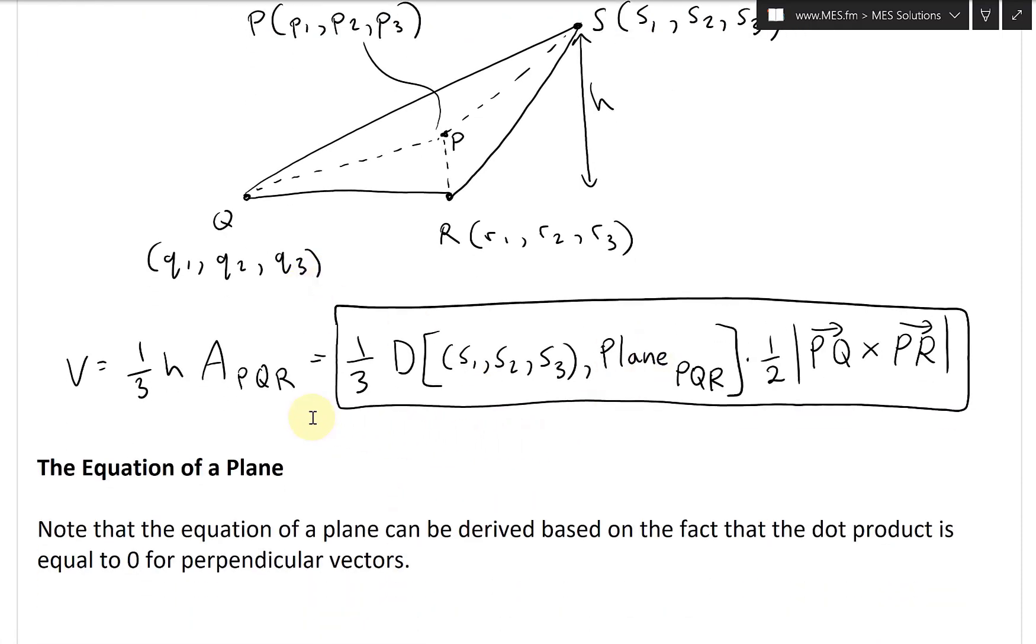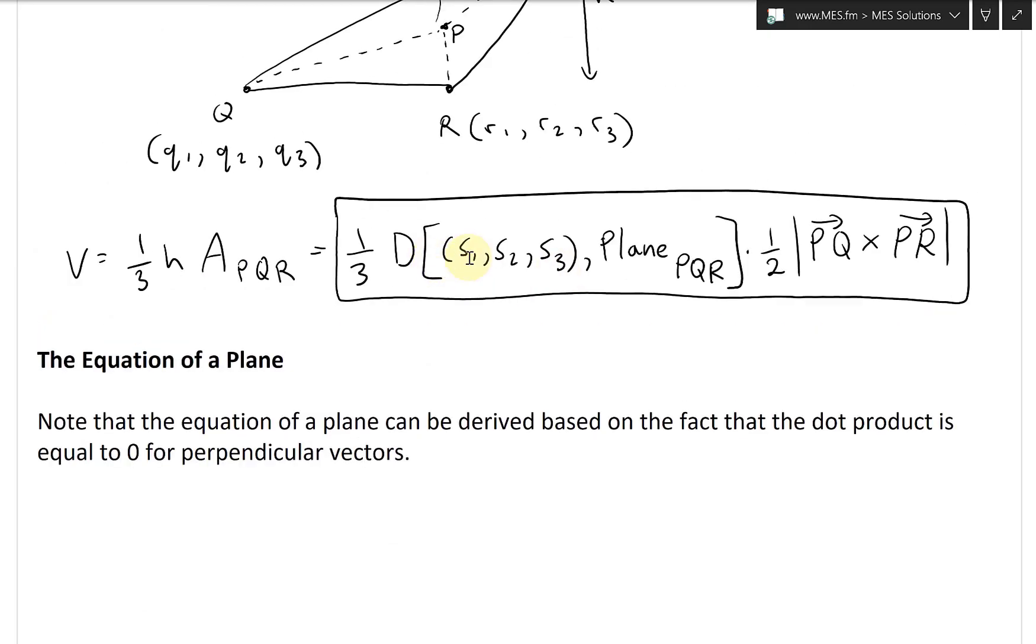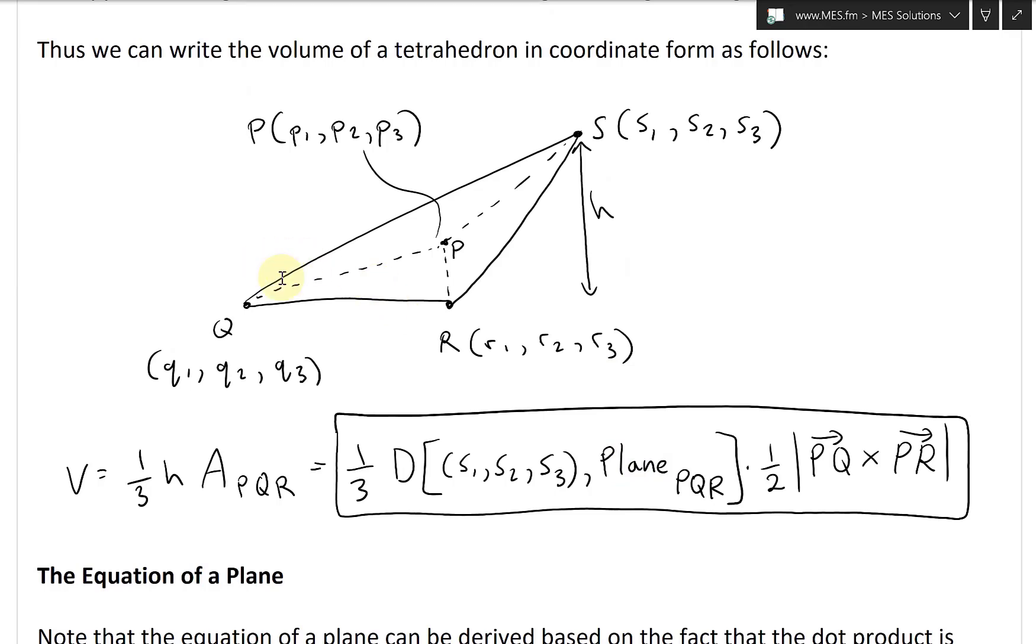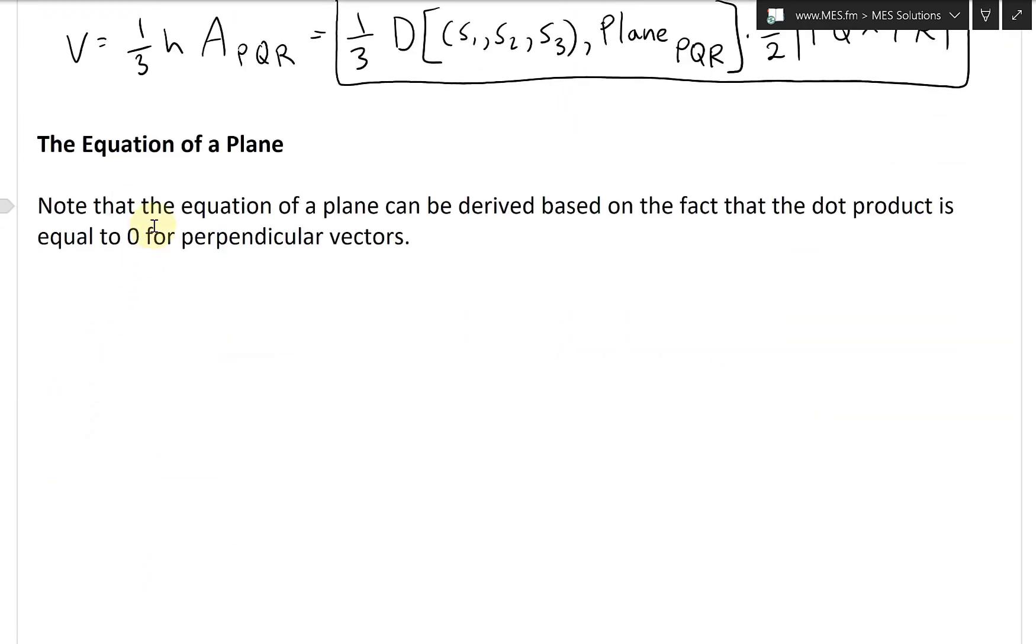All right, and now that we have this, let's just keep going further. We're going to look at now the equation of a plane, because here we have distance from this point S to the plane PQR, or that contains this triangle PQR. So let's write the equation of a plane.